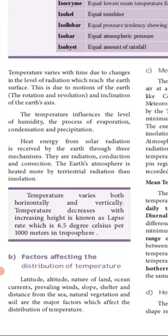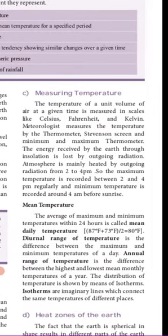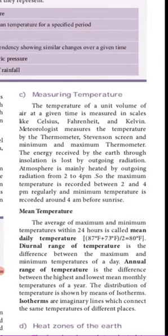Next is measuring temperature. The temperature is measured in scales like Celsius, Fahrenheit, and Kelvin. Meteorologists measure the temperature using a thermometer, Stevenson screen, and minimum and maximum thermometer. The energy received by the earth through insolation is lost by outgoing radiation.